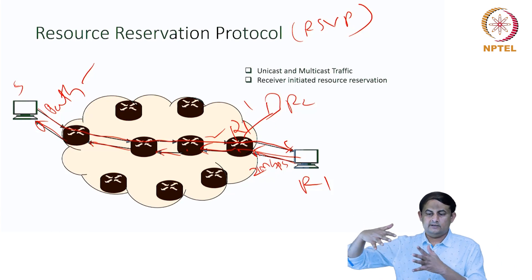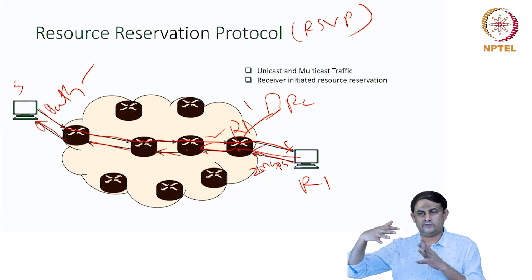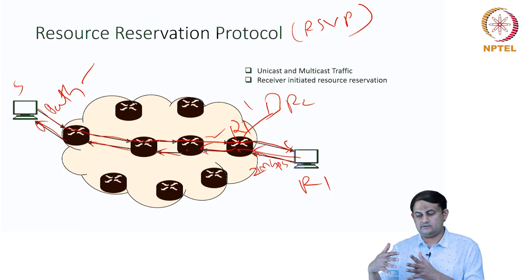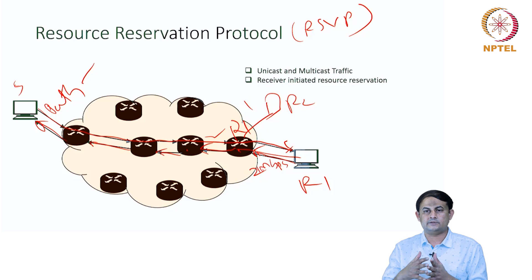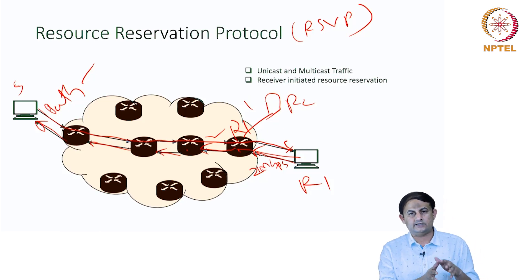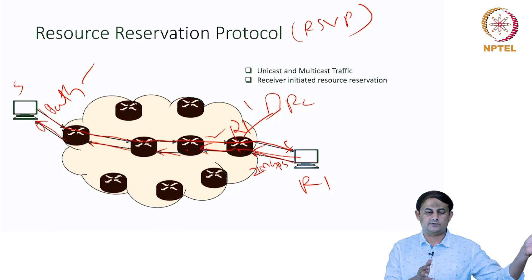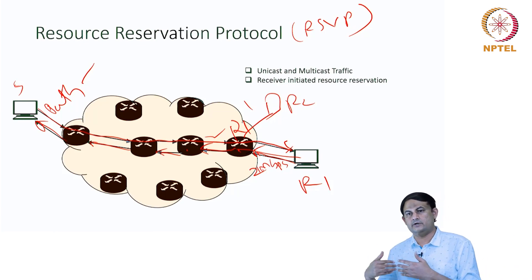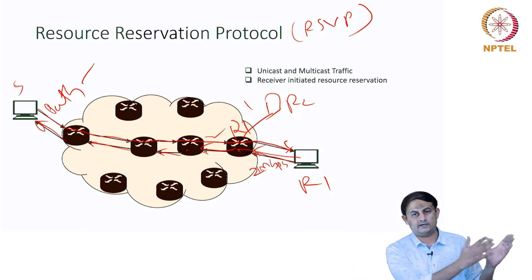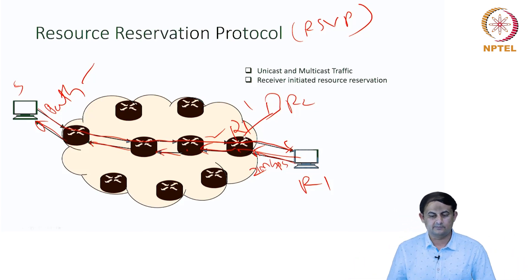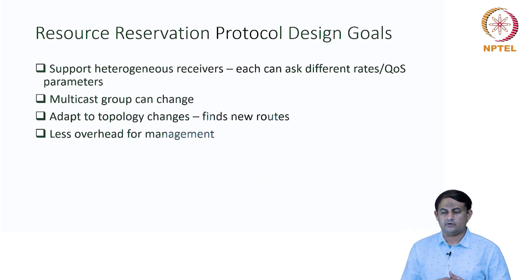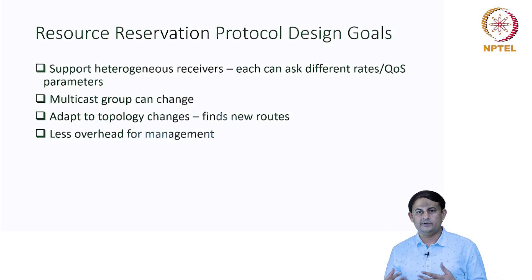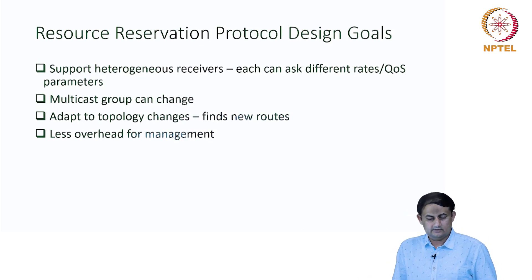When two transmissions get merged, there is a multicast kind of enrollment. The router where the two transmissions are merging can ask the next upstream router for whatever is exactly required to meet the two different requirements. Accordingly, the RSVP has been designed to support certain operations.